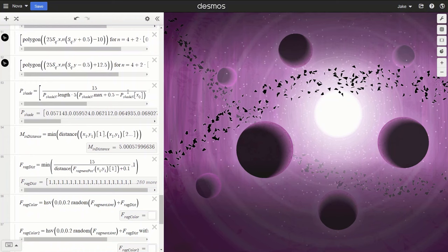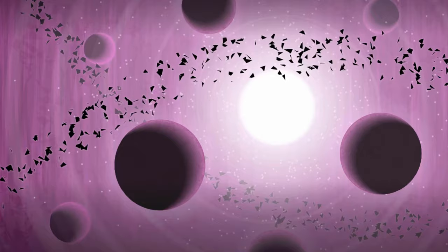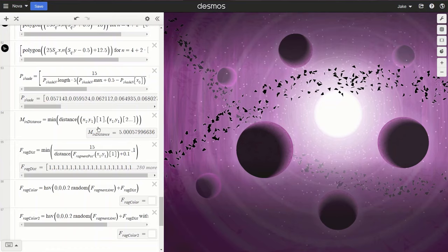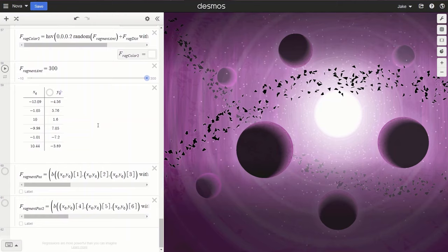I even made a function to change the lighting on the planets depending on their position, since they move ever so slightly in the animation. The asteroid belts were made by creating random points and making polygons out of them.